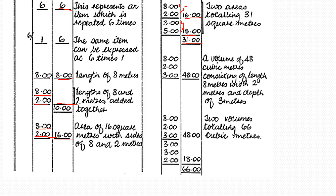For a volume of 48 cubic meters: length eight, width two, depth three — multiply to get 48, written in the squaring column. For two volumes totaling 66 cubic meters, you enter length, width, depth for each. After writing both answers in the squaring column, you add them to get 66.